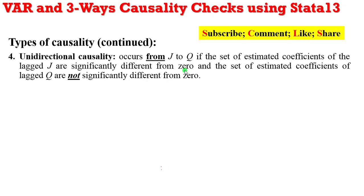Whenever you hear the term significantly different from 0, it means that coefficient is statistically significant. And when you hear not significantly different from 0, it means that coefficient is not statistically significant. So I'm going to use the three variable VAR model to explain this unidirectional causality and every other causality.